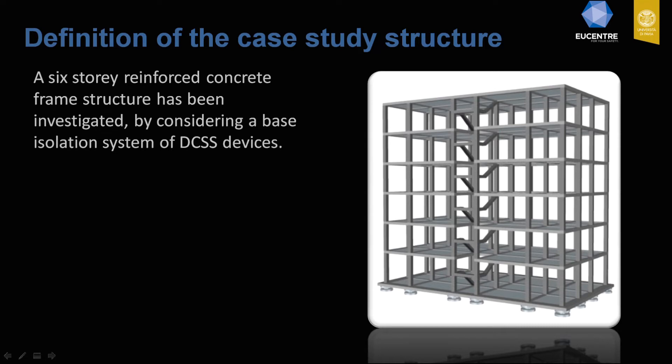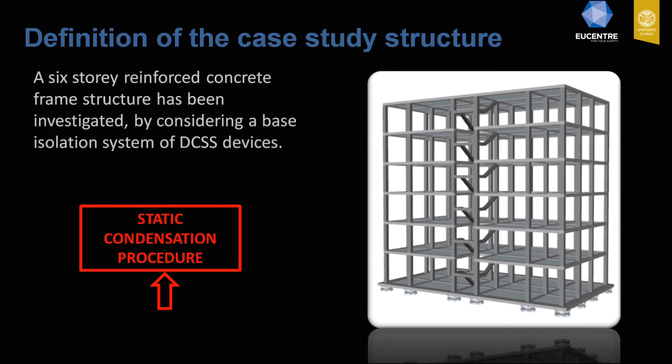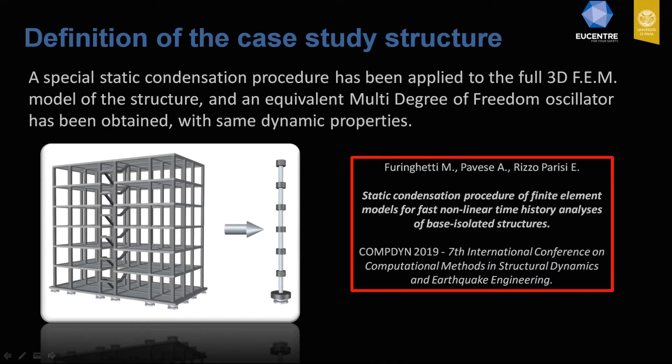The case study structure consists of a six-story reinforced concrete frame structure, and the isolation devices are made up of double concave surface slider devices. To consider the full model in a simpler way, a static condensation procedure was applied in order to switch from the full three-dimensional finite element model of the structure to a multi-degree of freedom oscillator. All the details for this procedure are described in an article presented at the COMPDYN conference in 2019.